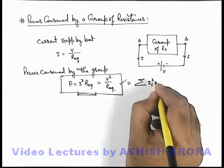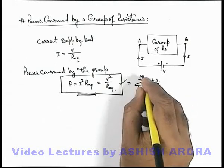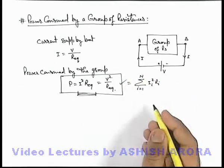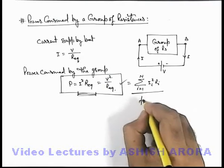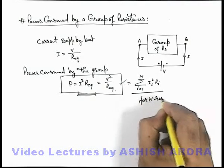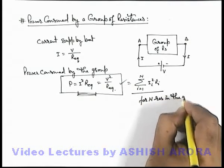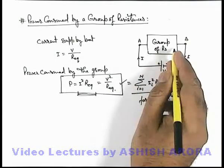I i squared R i, where i equals 1 to n. I is varying from 1 to n. This is basically for n resistances in the group. Say if n resistances are connected in the group.